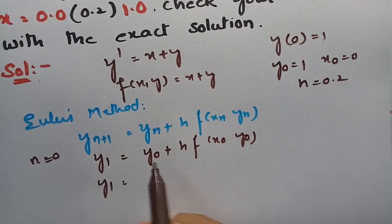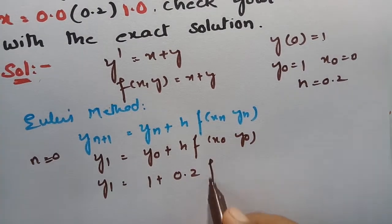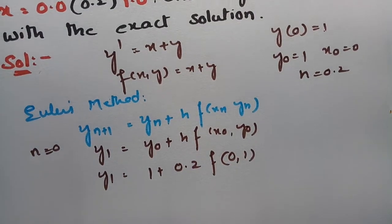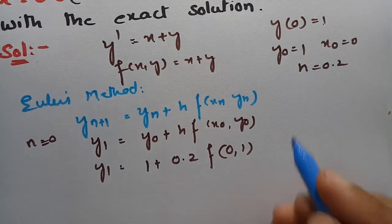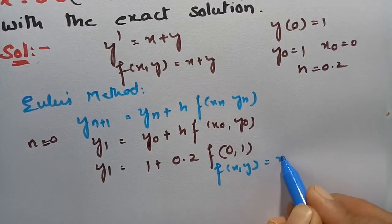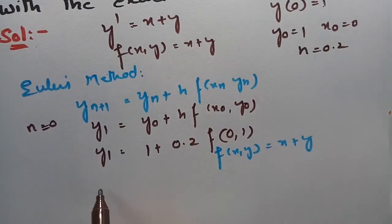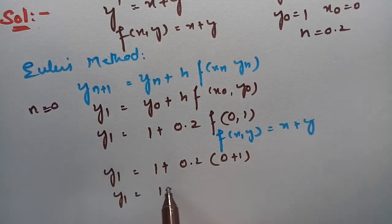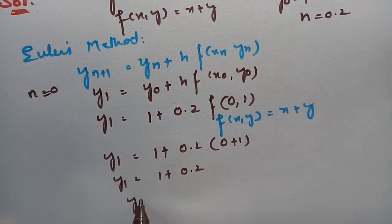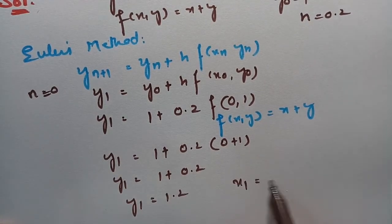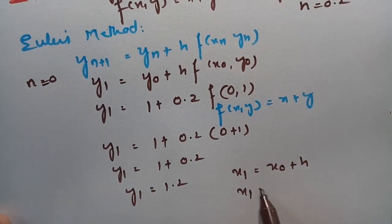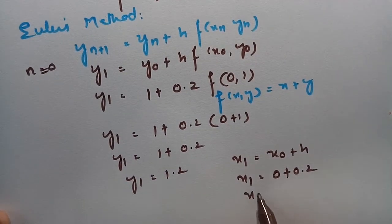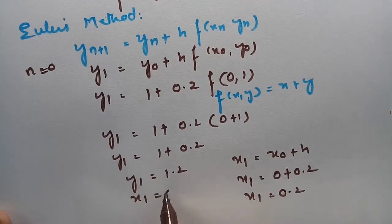y₀ = 1, h = 0.2, and f(x₀, y₀) = f(0, 1). Since f(x, y) = x + y, we get y₁ = 1 + 0.2 × (0 + 1) = 1 + 0.2 = 1.2. Also, x₁ = x₀ + h = 0 + 0.2 = 0.2.